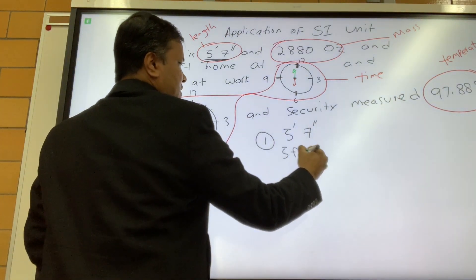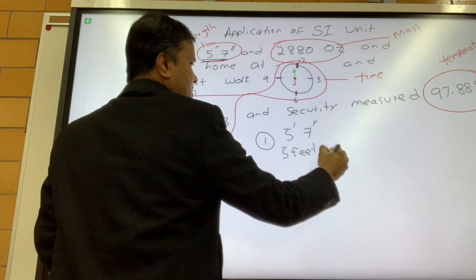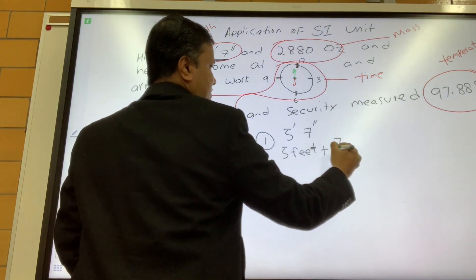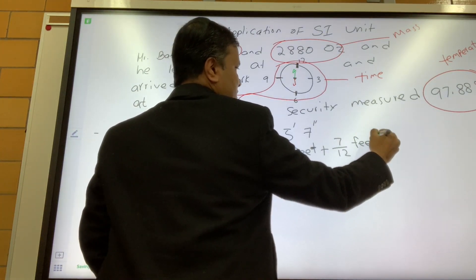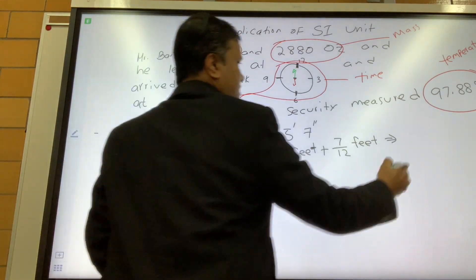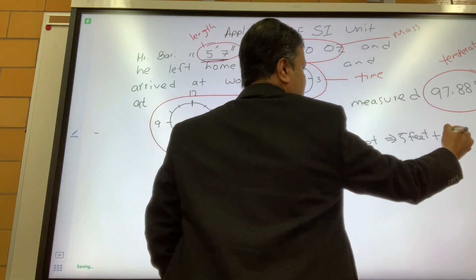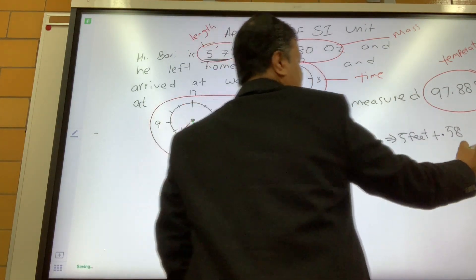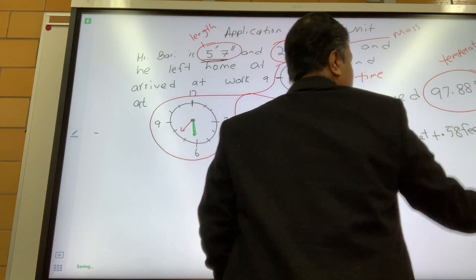Now convert them. 5 feet 7 inches. So 7 inches converted to feet: 7 over 12, 7 over 12 feet. So 5 feet plus 0.58, so 5.58 feet.